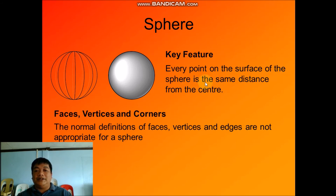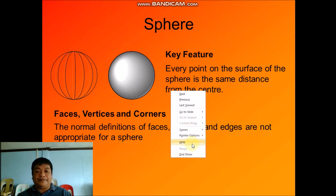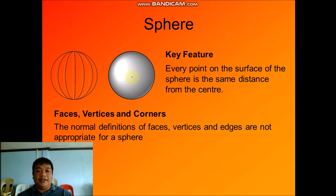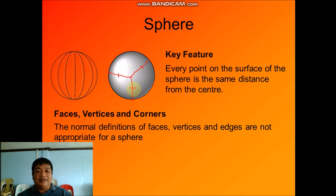Next is the sphere. The key feature of a sphere is that every point on the surface is the same distance from the center. If you draw a line from the center to any point on the surface, all those lines are equal — meaning the points are equidistant from the center.